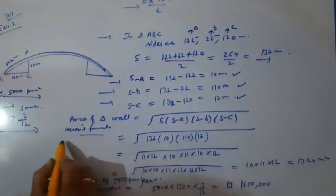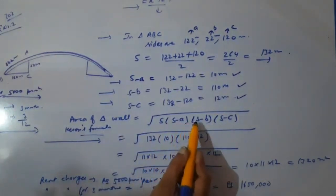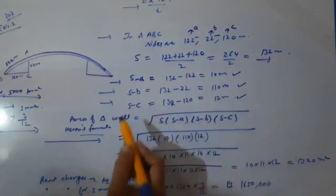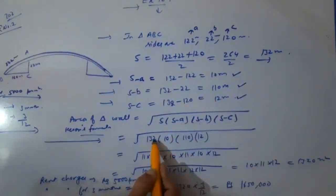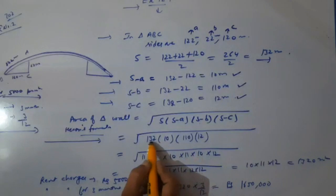Now put all these values in the Heron's formula: Area equals square root of S(S-A)(S-B)(S-C). That is square root of 132 × 10 × 110 × 12. Break this value 132 into 11 × 12, 10 as it is, 11 × 10, and then 12. Make the pairs.